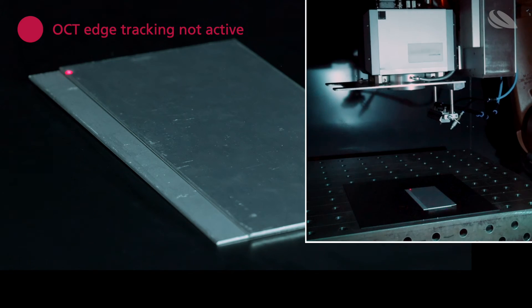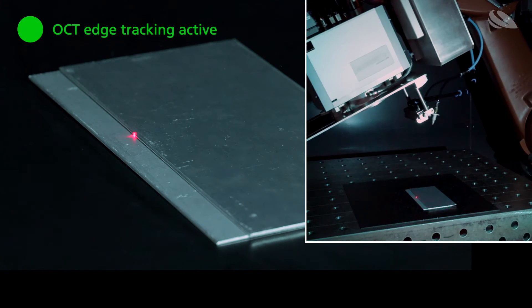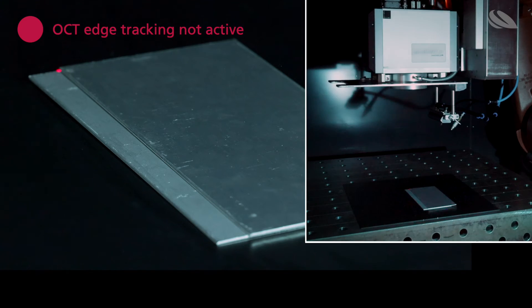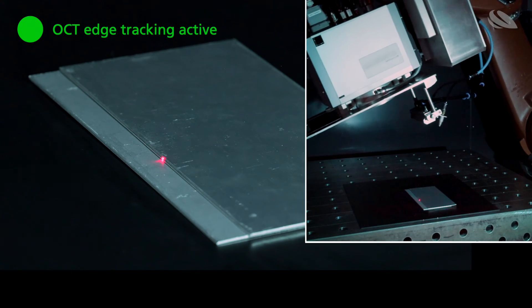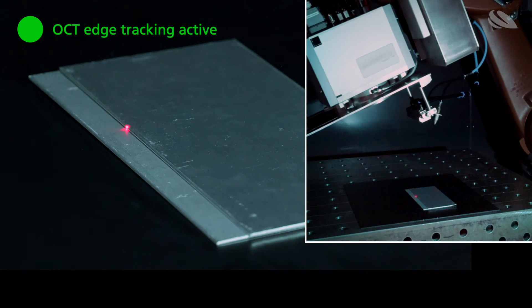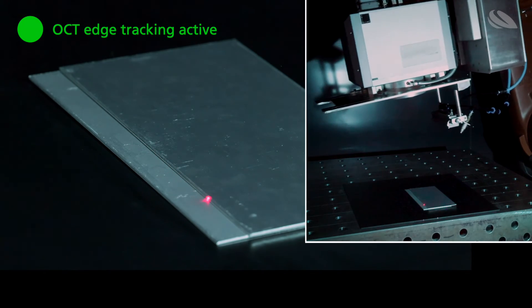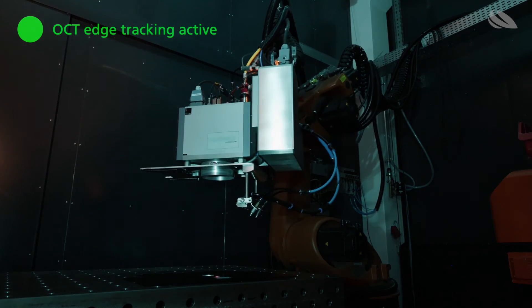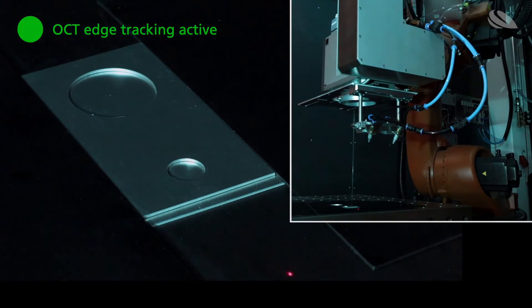OCT is completely independent of the scanner movement. The angle of incidence can range between 0 and 45 degrees without affecting the measurement quality. Both factors have no effect on the precision of OCT edge tracking. OCT tracking is omnidirectional and independent of scanner movements and the weld seam direction.